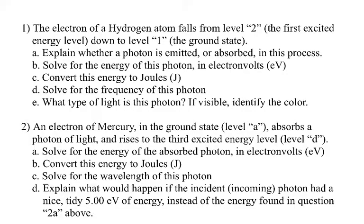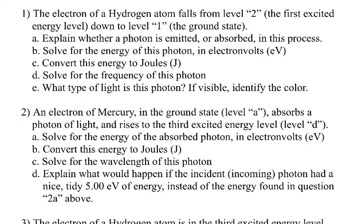These are the questions I wanted to go over. First, the electron of a hydrogen atom falls from level two, the first excited energy level, down to level one, the ground state. I want to know whether a photon is emitted or absorbed, solve for the energy of the photon in electron volts, convert it to joules, solve for the frequency, and tell me what kind of light it is — and if it's visible light, identify the color.